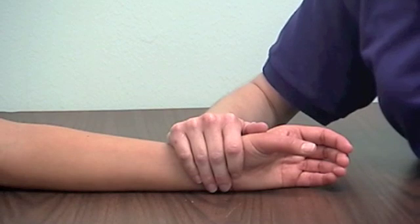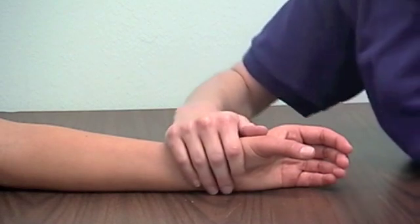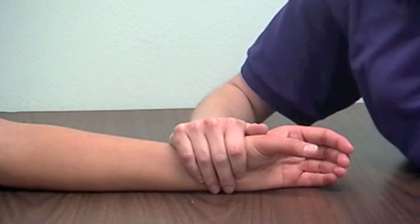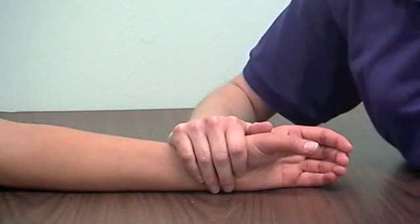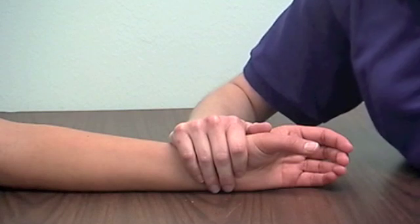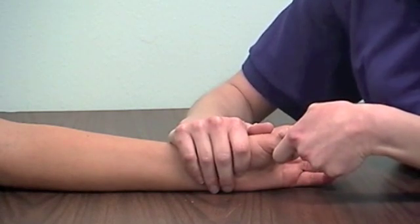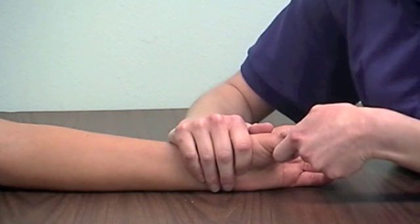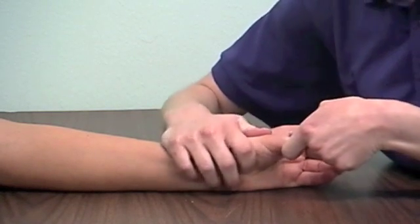The patient should be in a relaxed sitting position with the examiner stabilizing the wrist. With the patient's thumb in palmar abduction, the examiner should carefully grasp the thumb, be sure to block flexion of the IP and MCP joints, and apply axial compression.